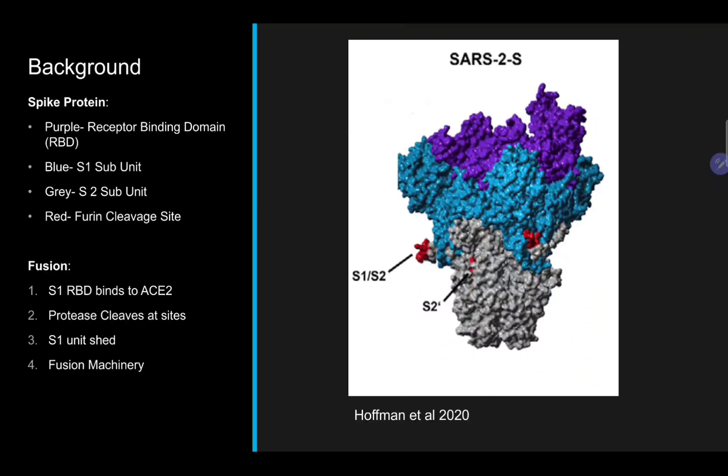Here on the right, we can see a picture of SARS-CoV-2 spike protein provided by Hoffman et al. The purple at the top represents the receptor binding domain, or RBD. This area is responsible for binding to the ACE2 receptor, as its name suggests. The blue area is the S1 subunit, and the gray, the S2 subunit.